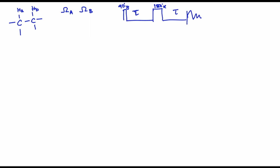We just learned that both chemical shifts for a and b would get refocused. So in this case we will just take one of the examples. Instead of a and b, let us use what we are familiar with — Ωᵢ and Ωs. These are the two spins, and they have a Jis which is non-zero.